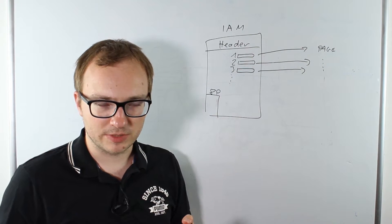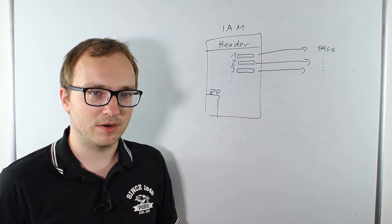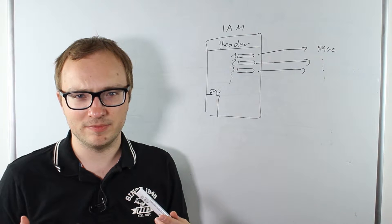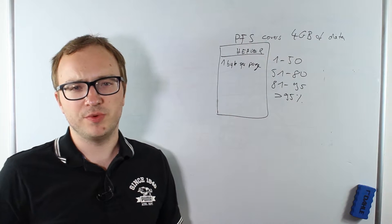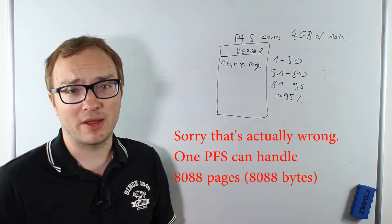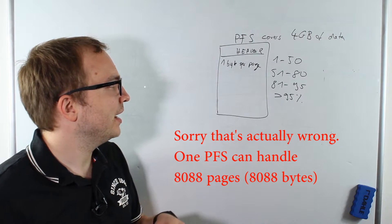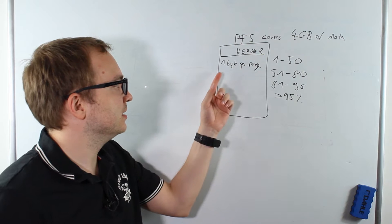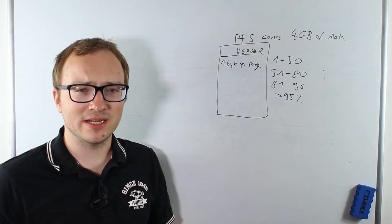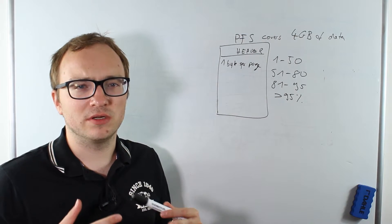That's also the way SQL Server inserts. Before we understand how SQL Server knows where to insert our data row, we have to cover some more pages. The next page we want to talk about is the PFS — the Page Free Space. A PFS covers four gigabytes of data and it has a byte array, always one byte per page. What the PFS basically tells us is how occupied a certain page is.